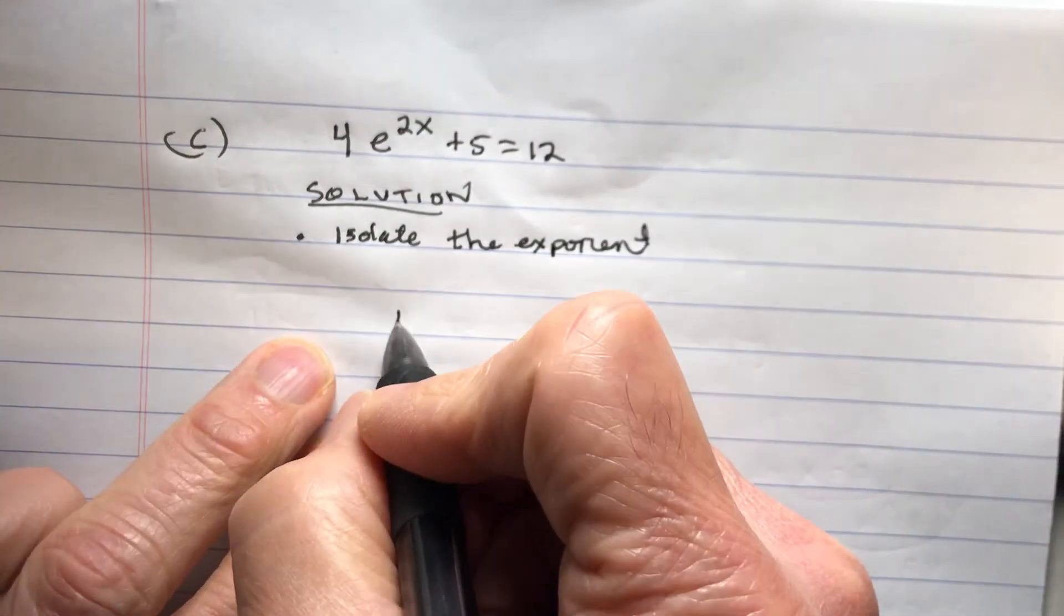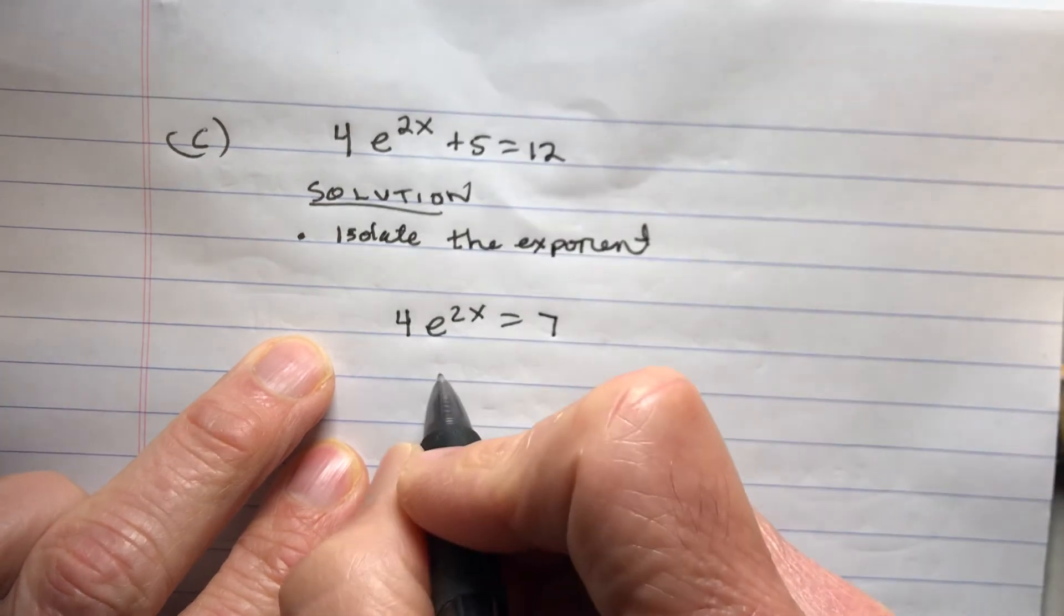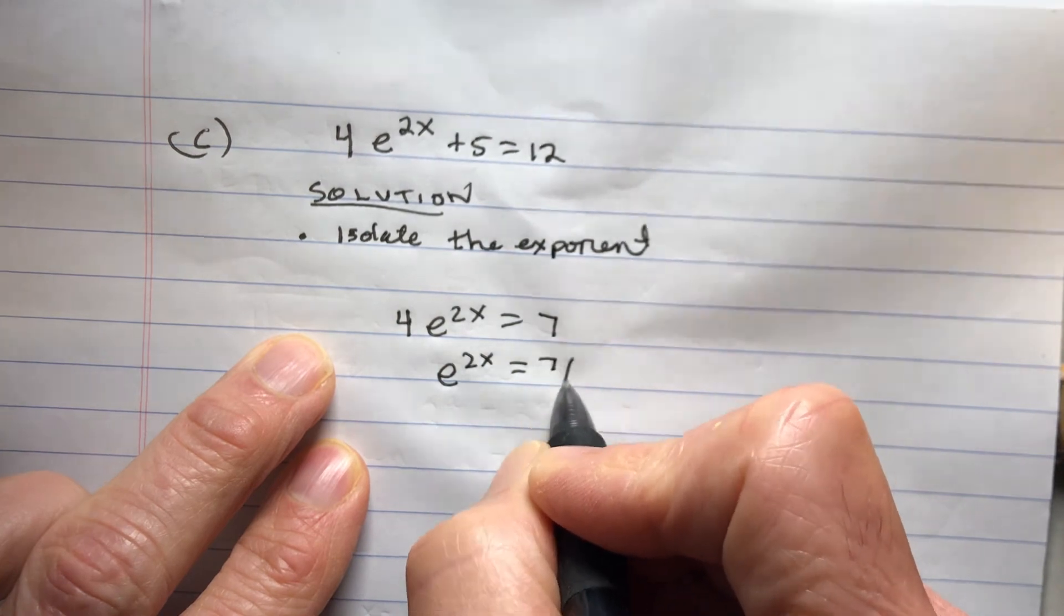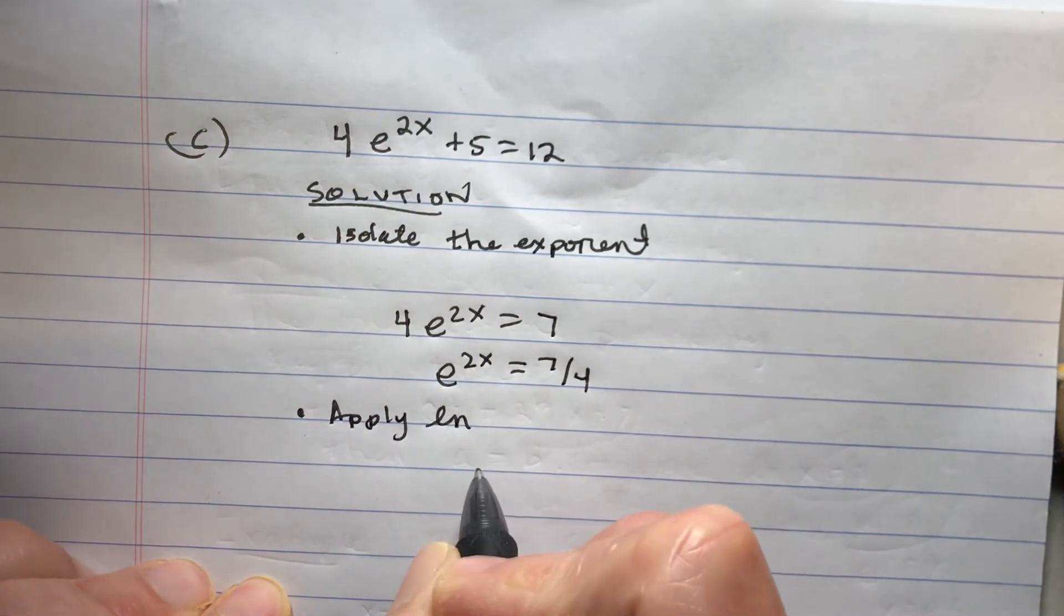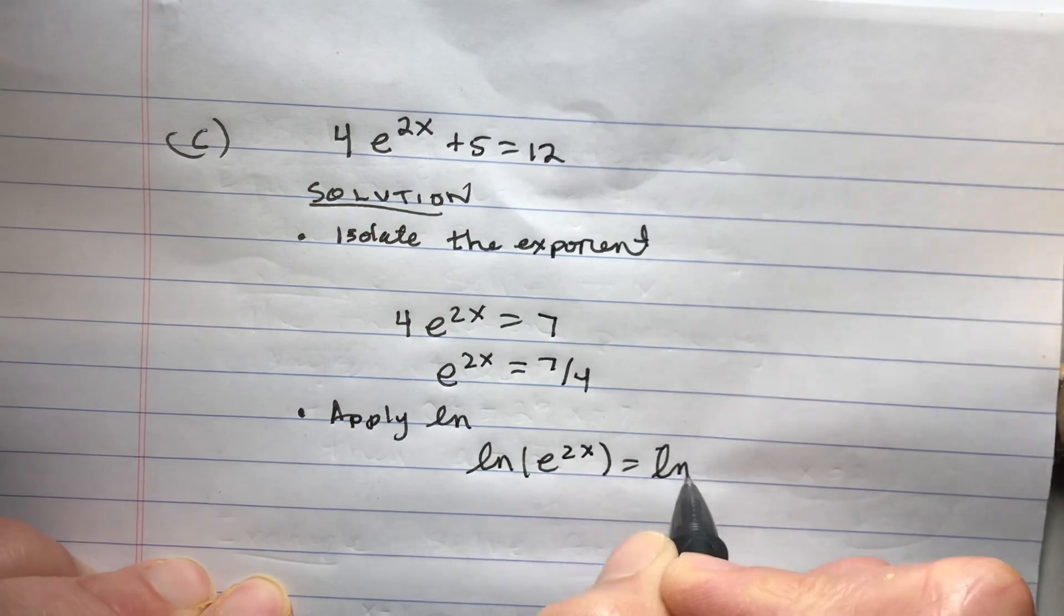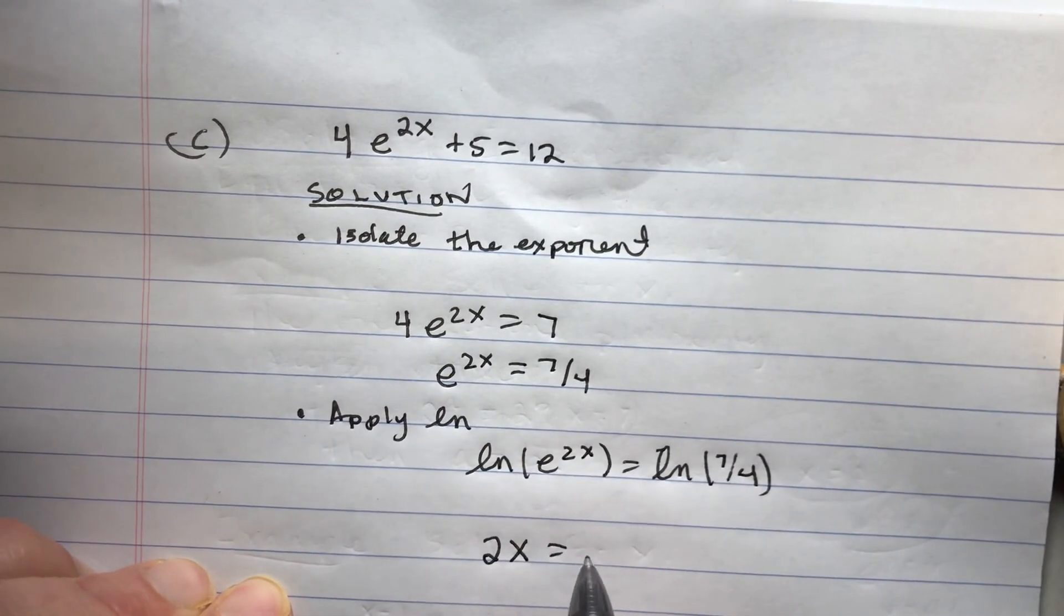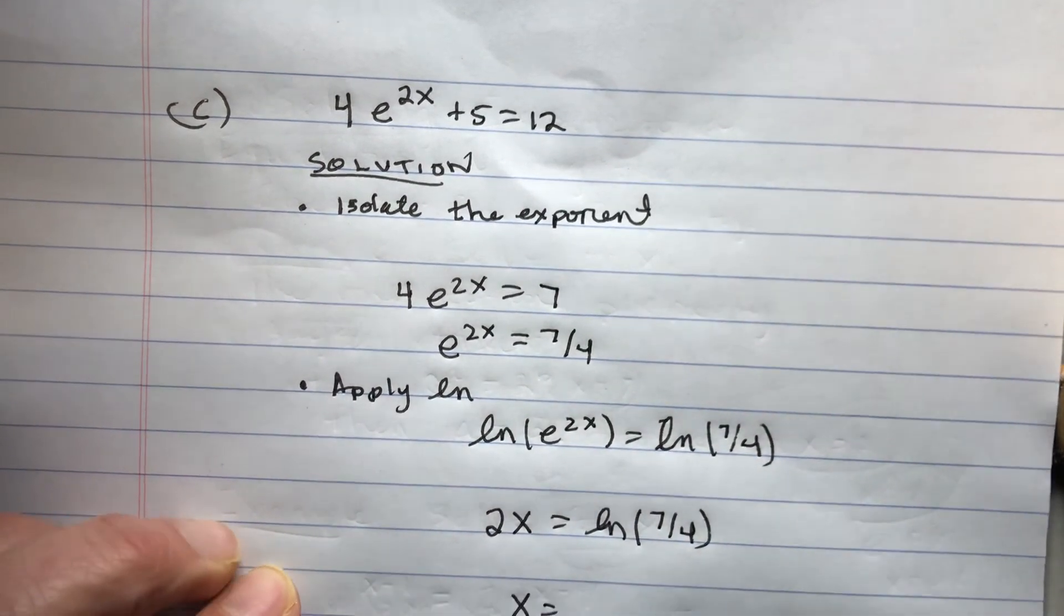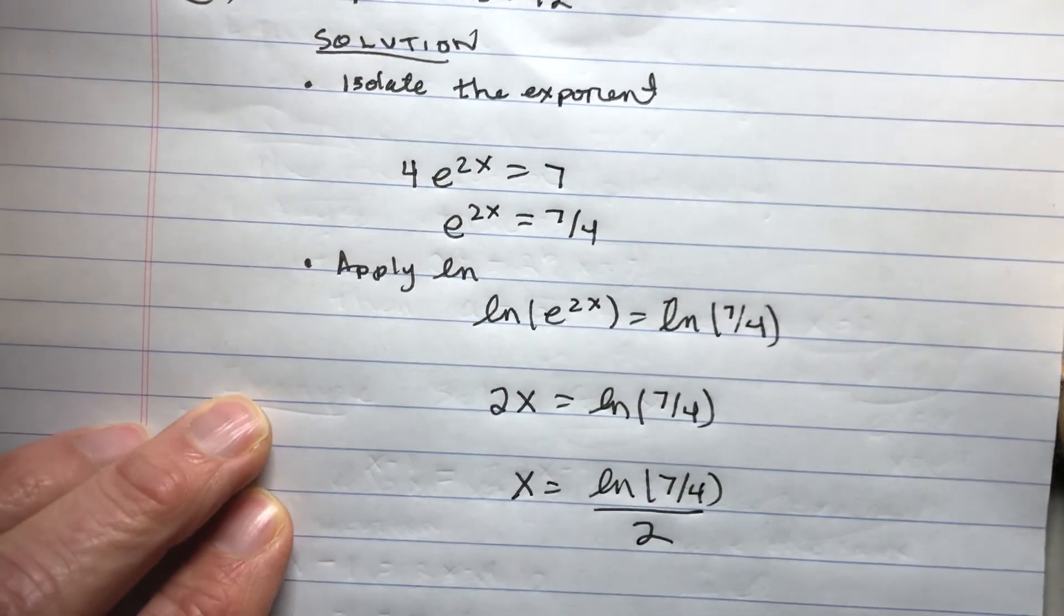So I'll have 4e to the 2x equals 12 minus 5, which seems like that's 7. E to the 2x equals 7 over 4. And then I apply ln. ln and e cancel out. And I divide by 2. And there we go.